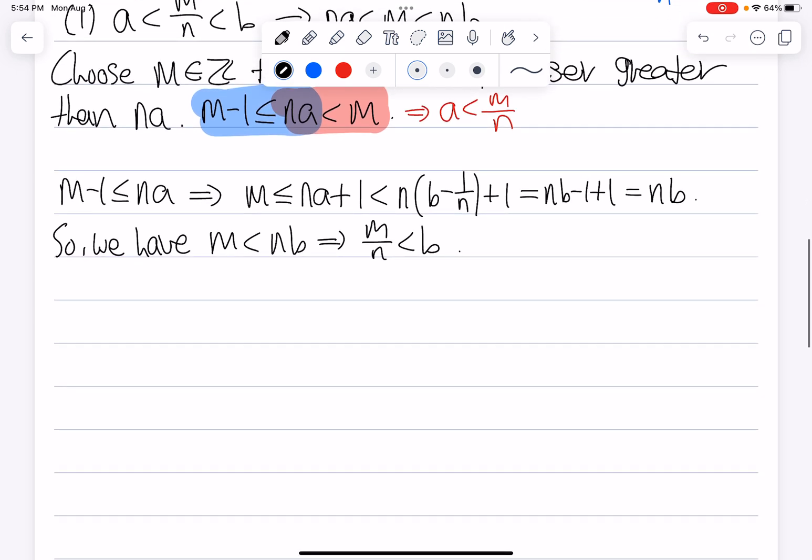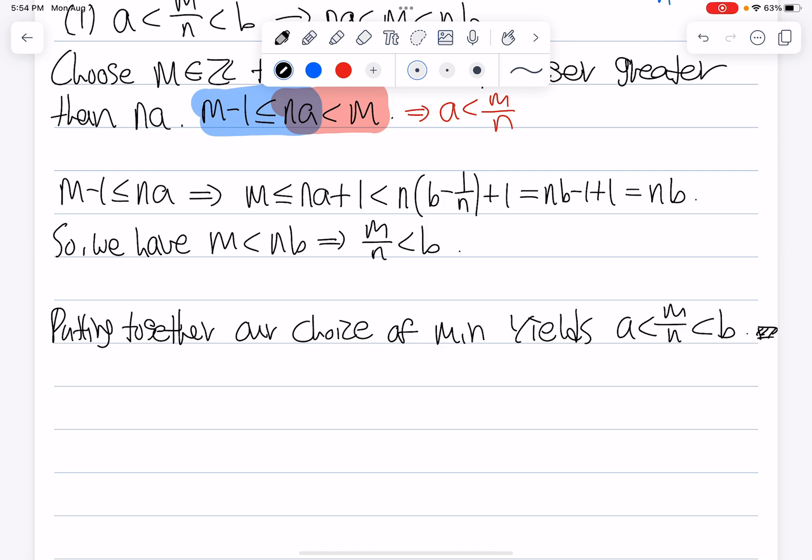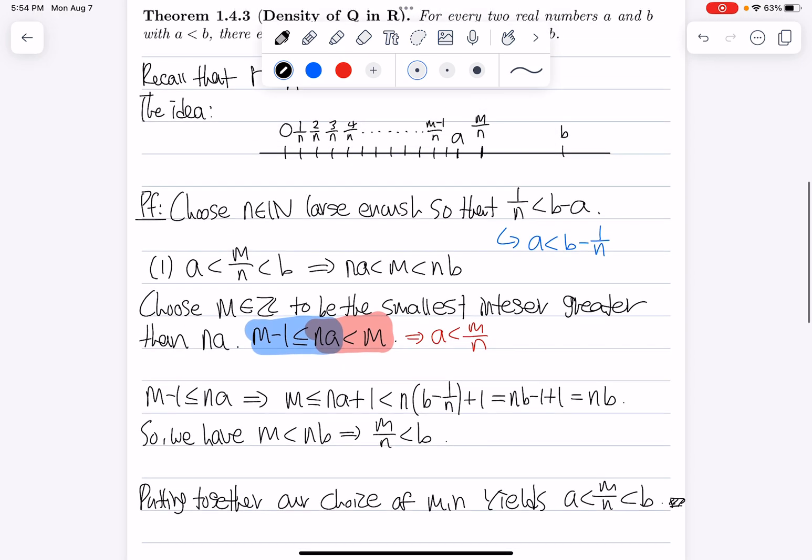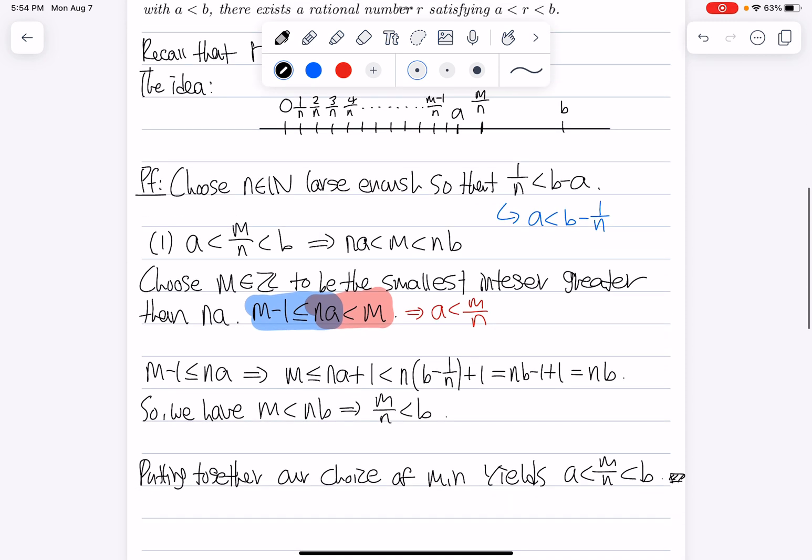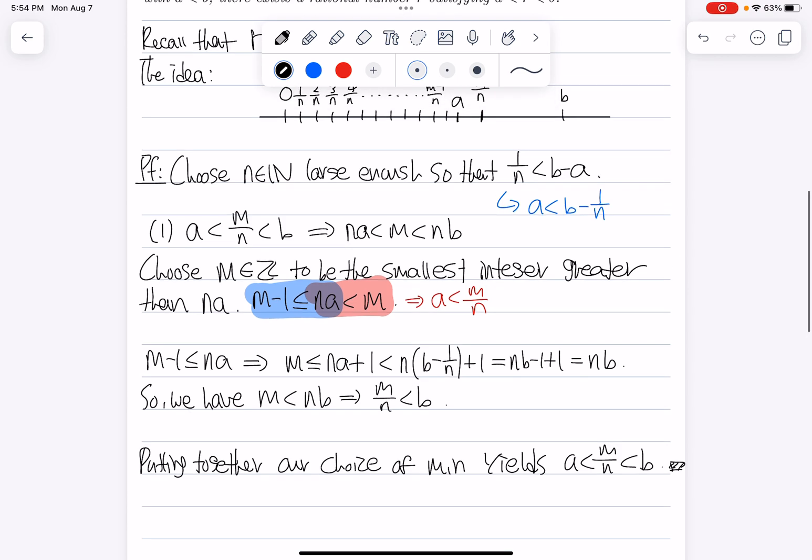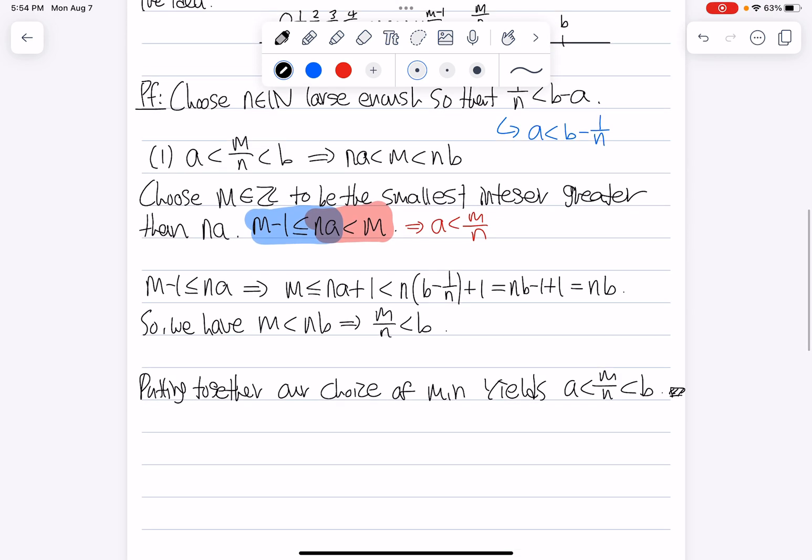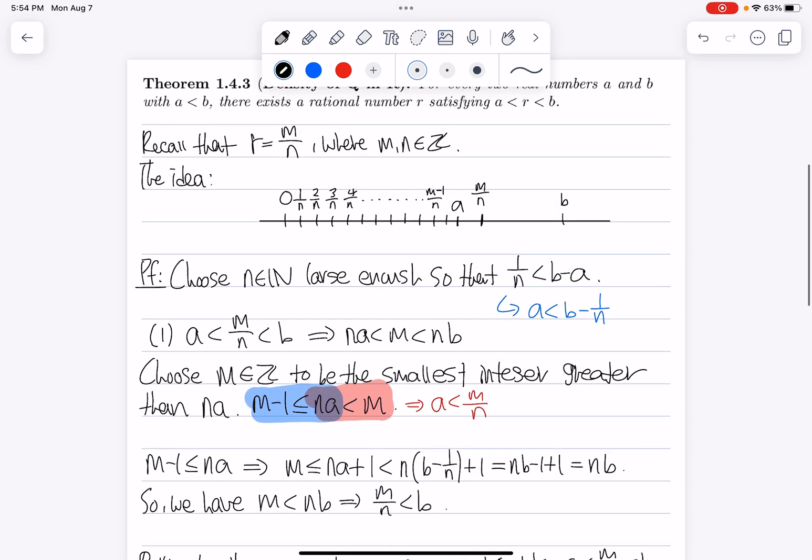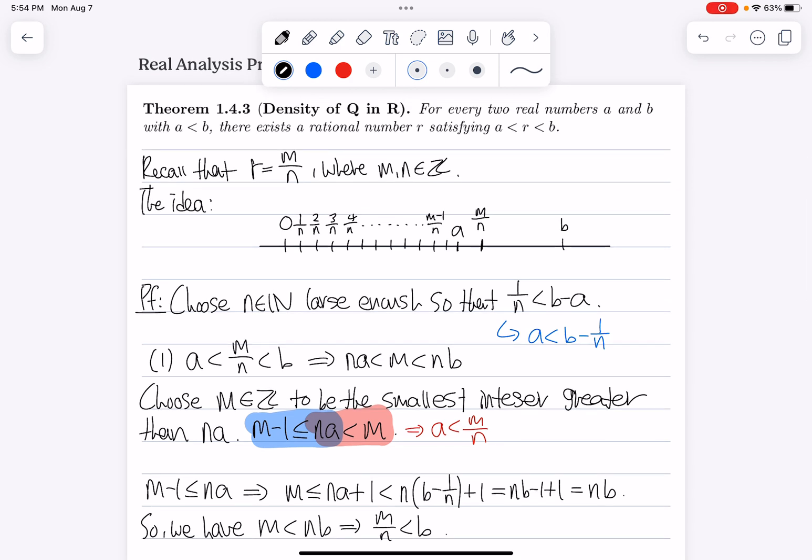All right, that's the end of our proof. Putting together, our choice of M and N yields A less than M over N less than B. And that's the end of our proof. So given two arbitrary real numbers A and B, we were able to produce a rational number R, which in this case was M over N, that is strictly between the two real numbers. And that's it. That's the density of Q and R theorem.